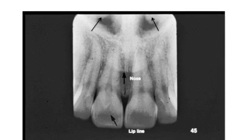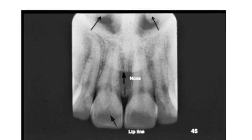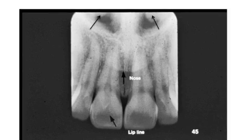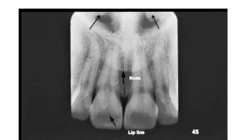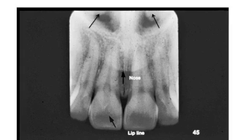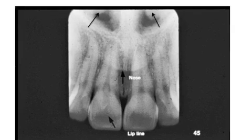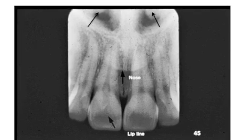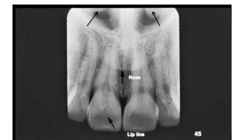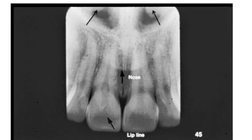The upper arrow points to radiopacities of thin shell-like bones, the inferior nasal concha, inside the radiolucent nasal fossa. The nose line is particular to an individual and may not always look this shape. It is a faint radiopacity showing the outline of the soft tissue of the nose. The lip line is a faint opacity over the crowns of the teeth showing the outline of the lips.